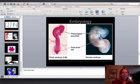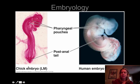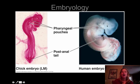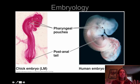Here you can see two vertebrates that are developing: a chicken and a human. You can see there are a couple of similarities — you've got that backbone, you have that post-anal tail, pharyngeal slits — all of these similar characteristics. That says these organisms have shared a common ancestor relatively recently.